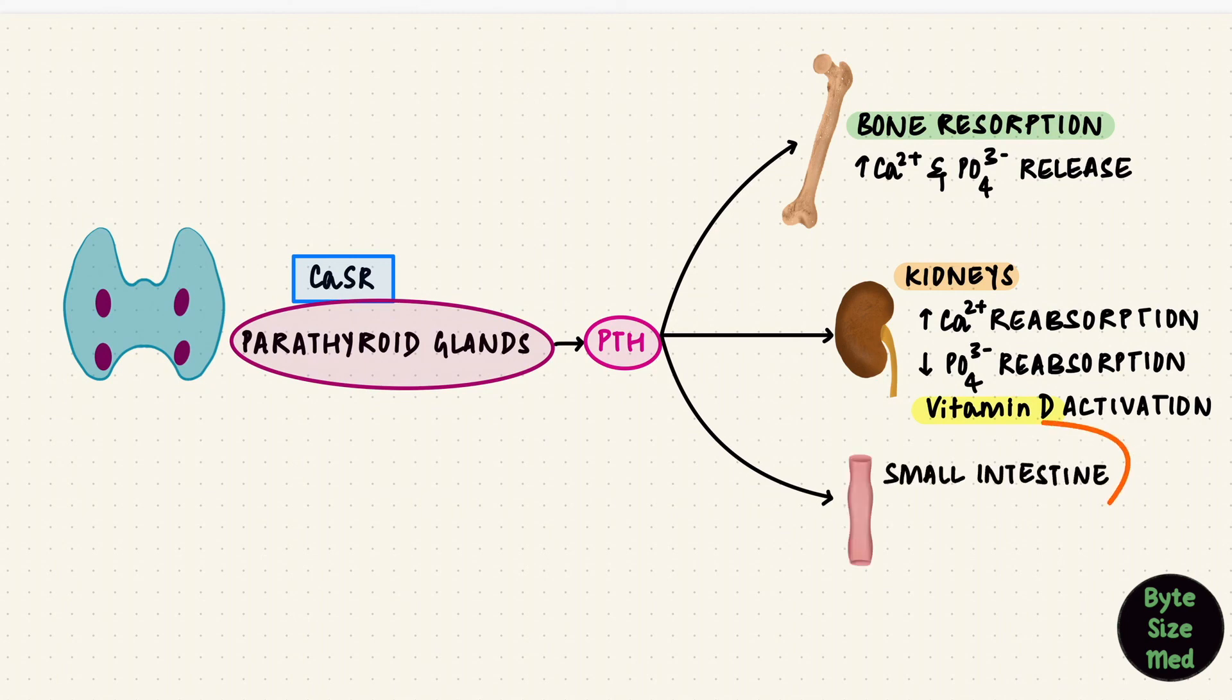And then through that vitamin D, it increases calcium absorption in the small intestine. That's when the plasma calcium is low. More PTH. Instead, when the plasma calcium is high, the release of PTH is inhibited, stopping all of this from happening.